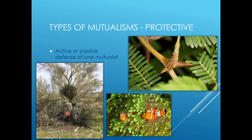These are nurse plants — this bigger tree is shading and protecting, allowing seedling growth of smaller plants underneath, basically protecting them from the harsher conditions of the desert. We find these commonly in arid areas.